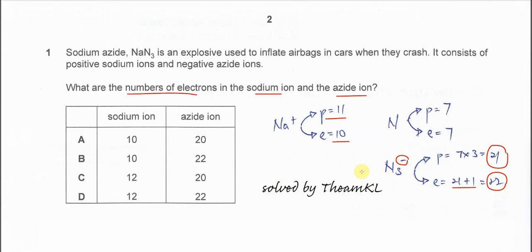Okay, so we know that the sodium ion's electron number is 10 and the azide electron number is 22. So therefore the answer is B. That's all. Thank you.